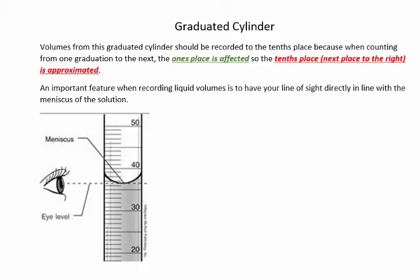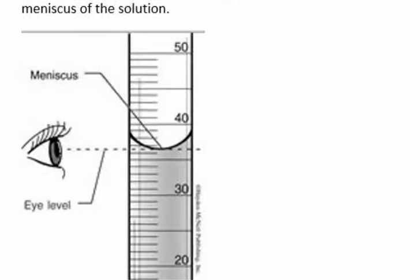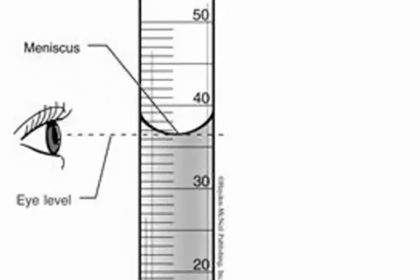Next, I'll show you examples with a graduated cylinder. Volumes from this graduated cylinder should be recorded to the tenths place, because when counting from one graduation to the next, the ones place is affected. So the tenths, the next place to the right, is approximated.